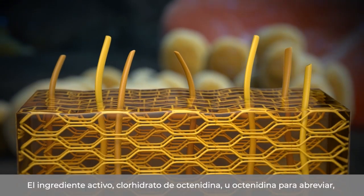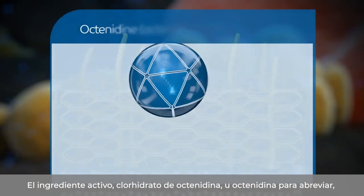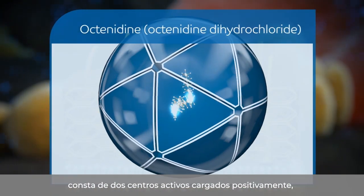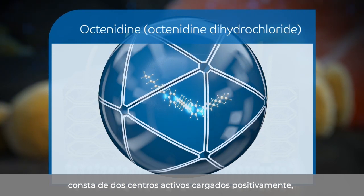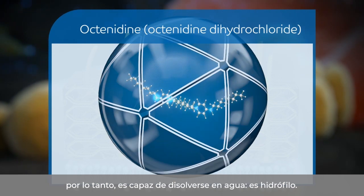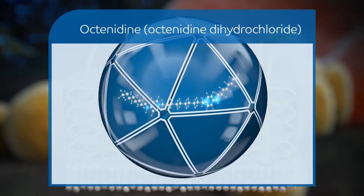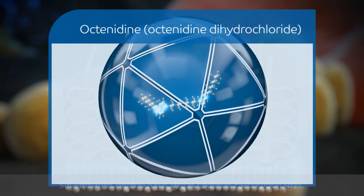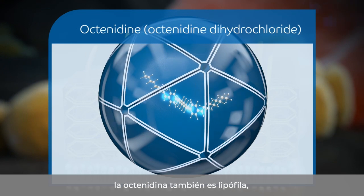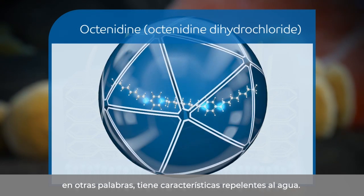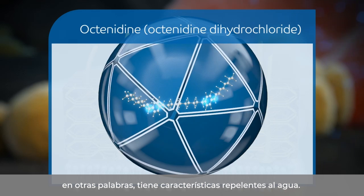The active ingredient, octenidin dihydrochloride, or octenidin for short, consists of two positively charged active centers. Therefore, it is able to dissolve in water — it's hydrophilic. However, due to its long hydrocarbon chains, octenidin is also lipophilic, in other words, having water-repellent characteristics.